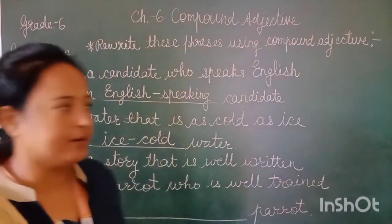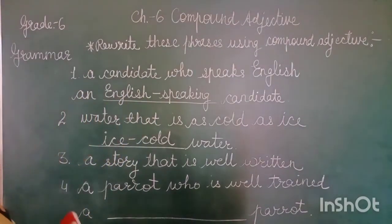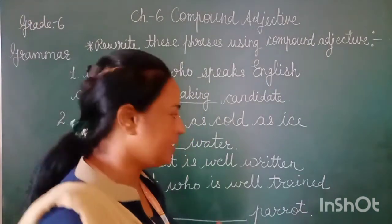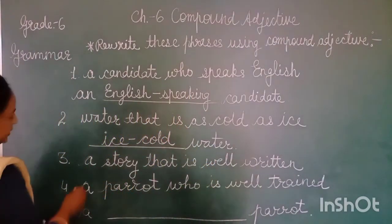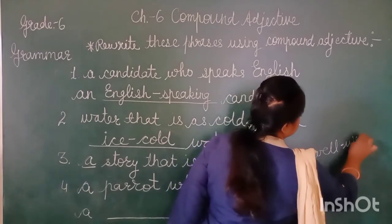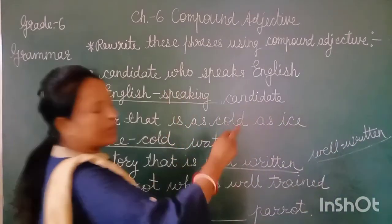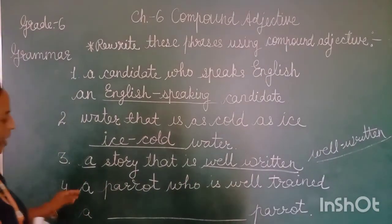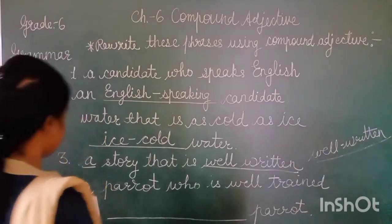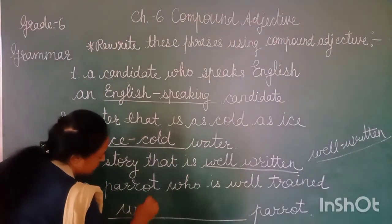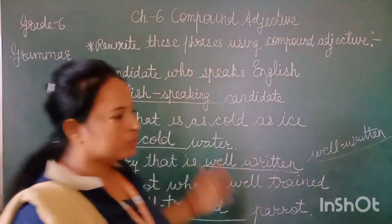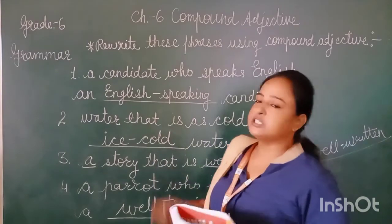Third example: 'A story that is well written' — a story that is very nicely written — can be rewritten as 'a well-written story.' Here 'well-written' is a compound adjective. Fourth: 'A parrot who is well trained' — a parrot that is very well trained — can be rewritten as 'a well-trained parrot.' Students, go through this exercise and this video — I hope you understood this chapter very well.